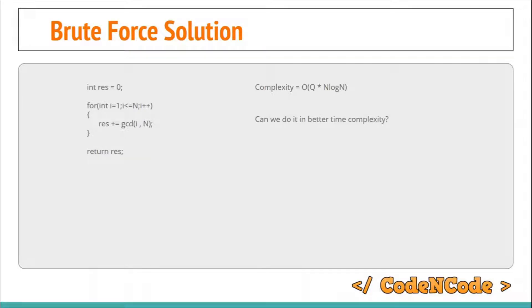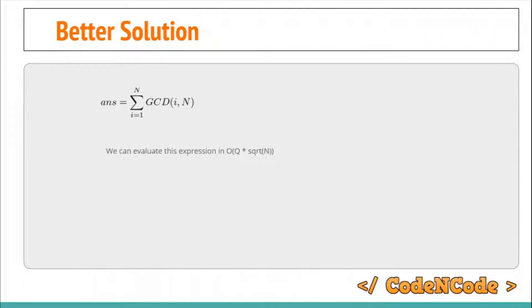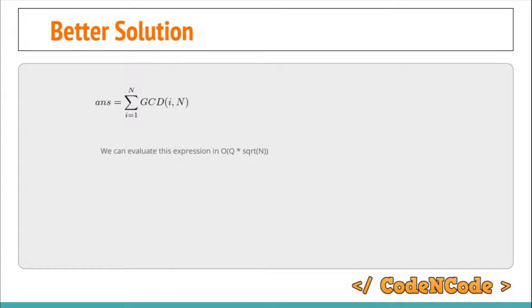The question is: can we do better? The answer is yes. The same expression can be evaluated for Q queries in O(Q * sqrt(N)) overall complexity. This means each query can be evaluated in O(sqrt(N)) time instead of O(N log N) time.